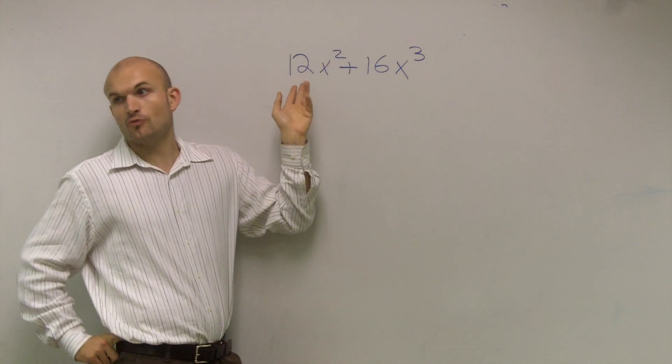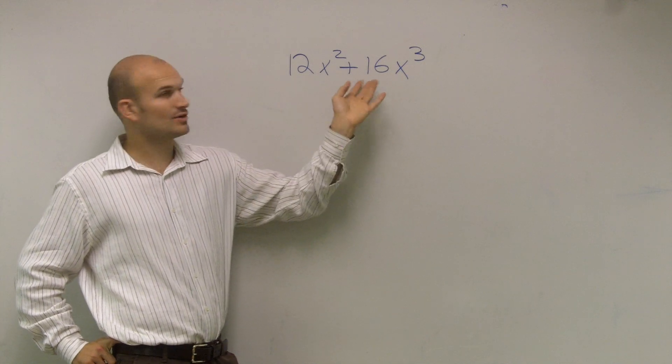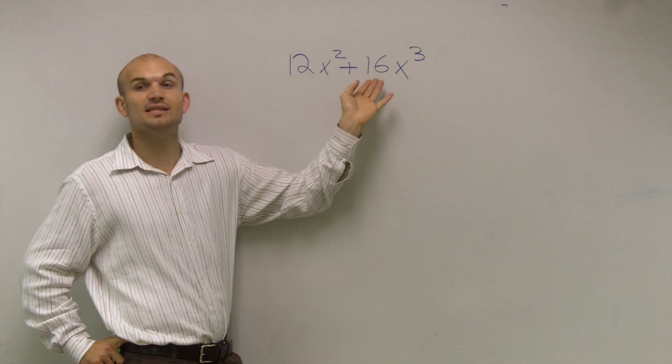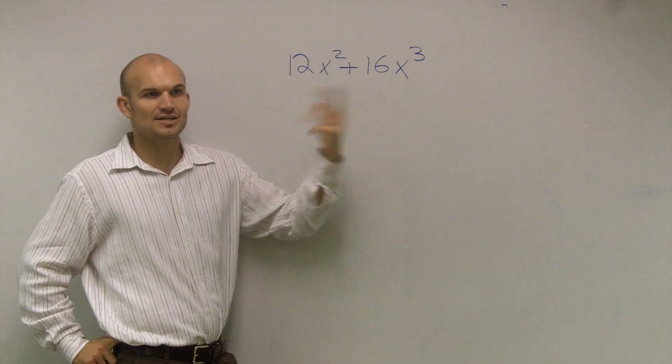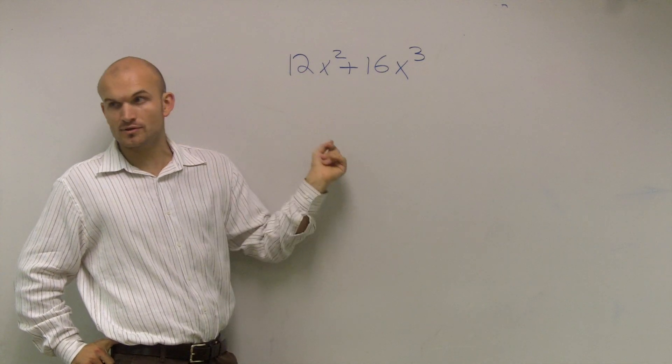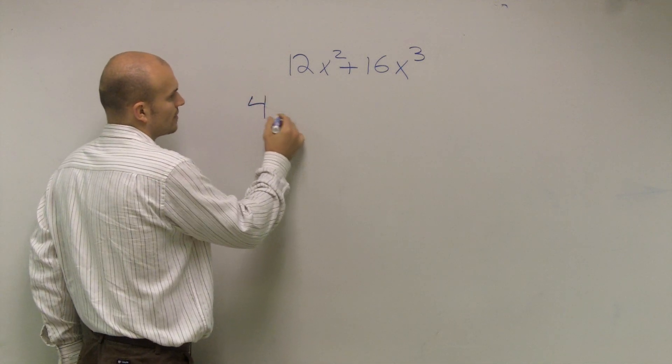And you think about, well, 4. 4 definitely goes into 12, and 4 goes into 16. And yeah, that's the greatest. There's other numbers that go into 16, like 8, but 8 doesn't go into 12. So what I can do is I can factor out 4. 4 is a factor of both of those numbers. So I can factor out a 4.